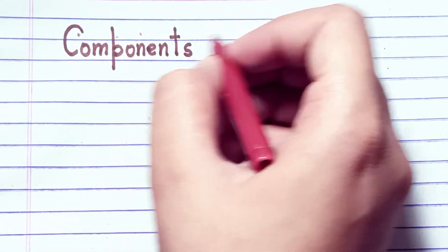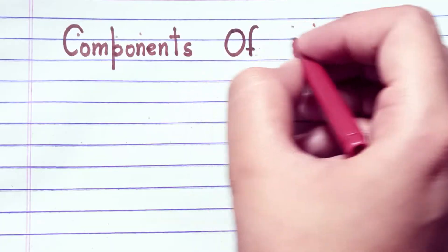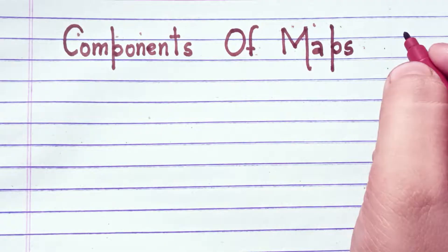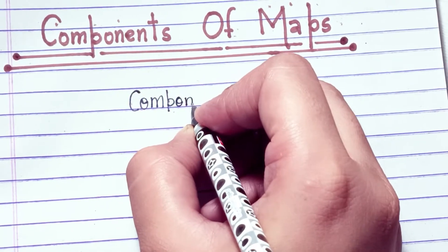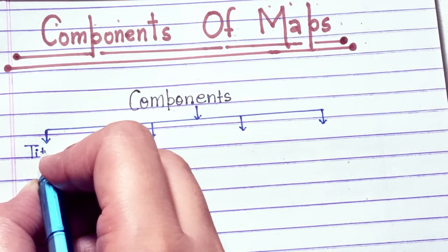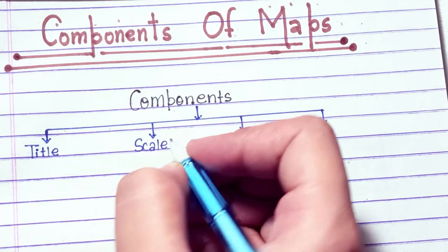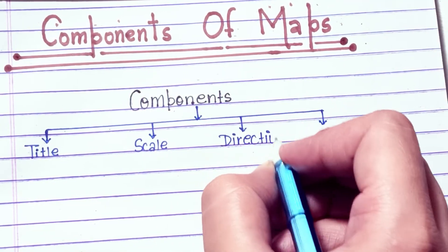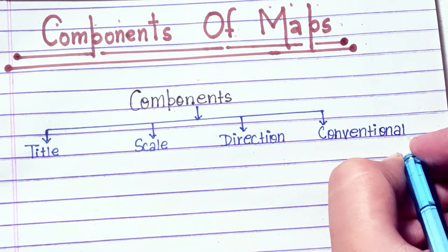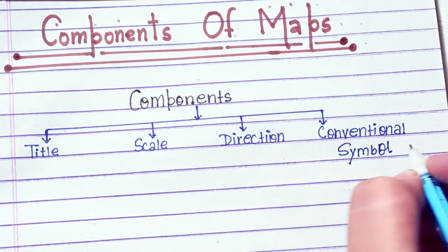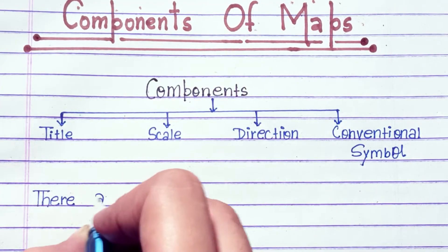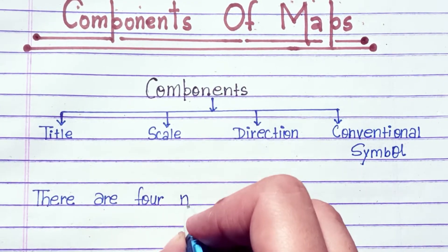Hello everyone, welcome back to our channel. Today's topic is components of maps, so let's get started. The components are title, scale, direction, and conventional symbols.